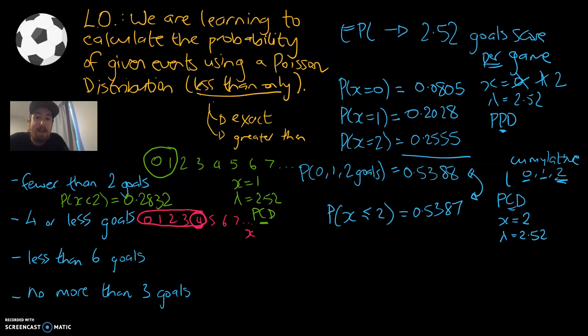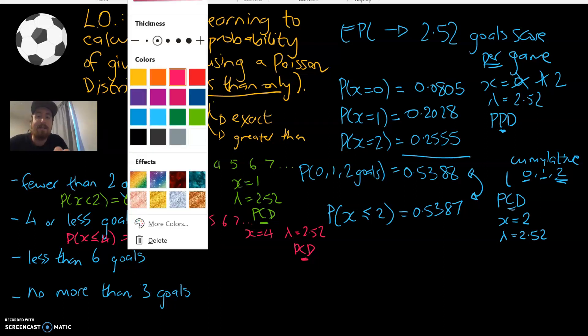The highest value in that range is the four. So that means x is going to be equal to four. Lambda will be 2.52. Because we're adding together multiple numbers, zero, one, two, three, four, we're going to be using the PCD mode. C means we're going to accumulate all of the numbers to find our final answer. That means the probability of less than or equal to four will be 0.8885, rounded to 4DP. Hopefully this is making sense.